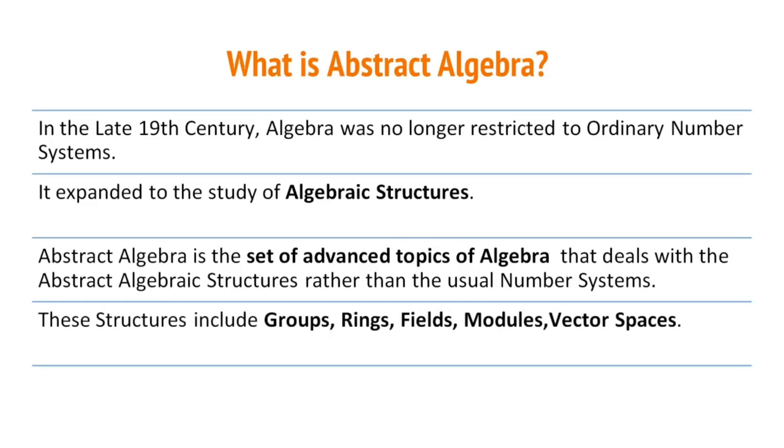These structures include groups, rings, fields, modules, vector spaces, etc. Abstract algebra is also referred to as modern algebra.